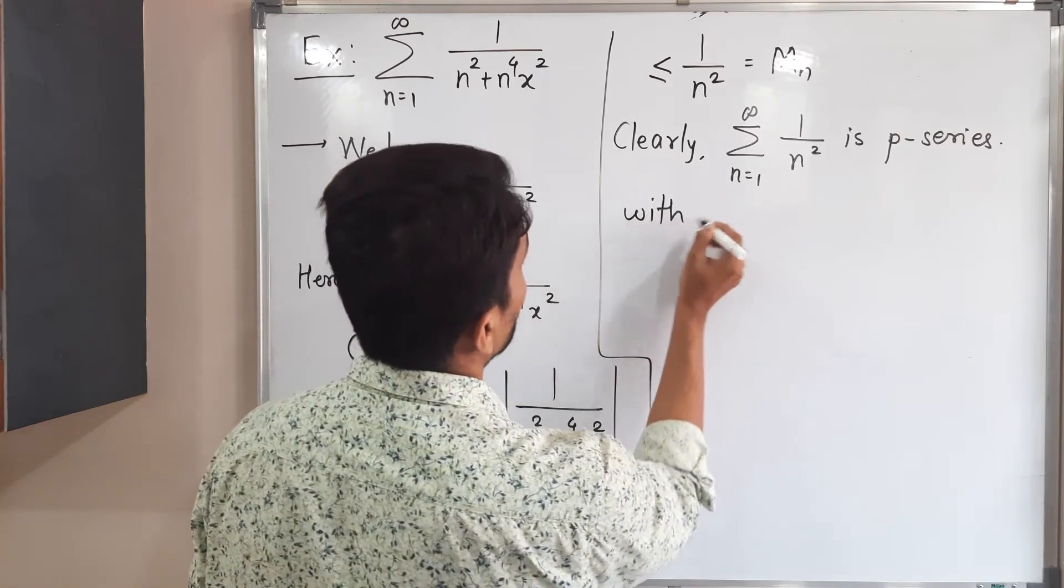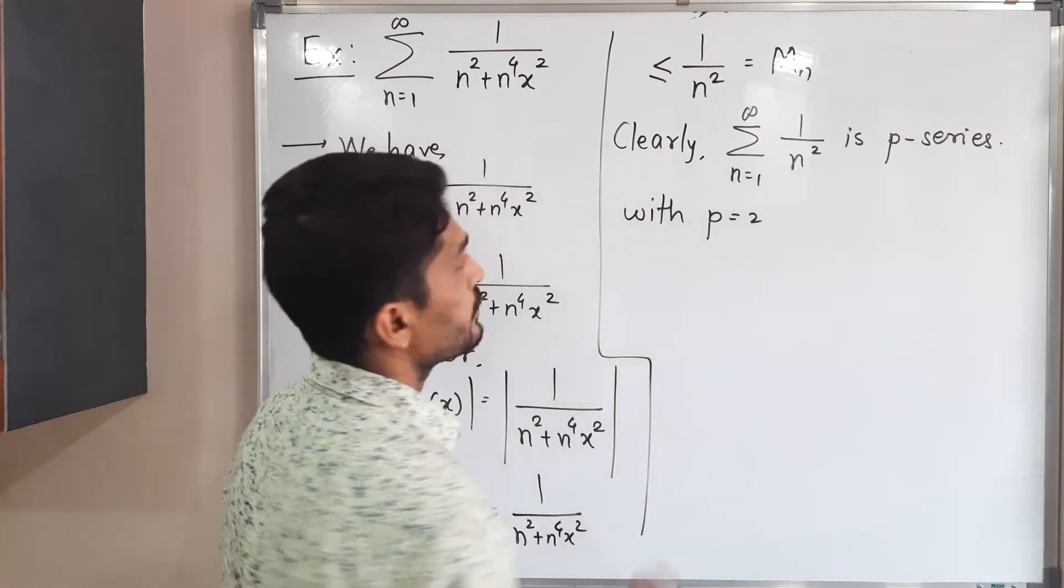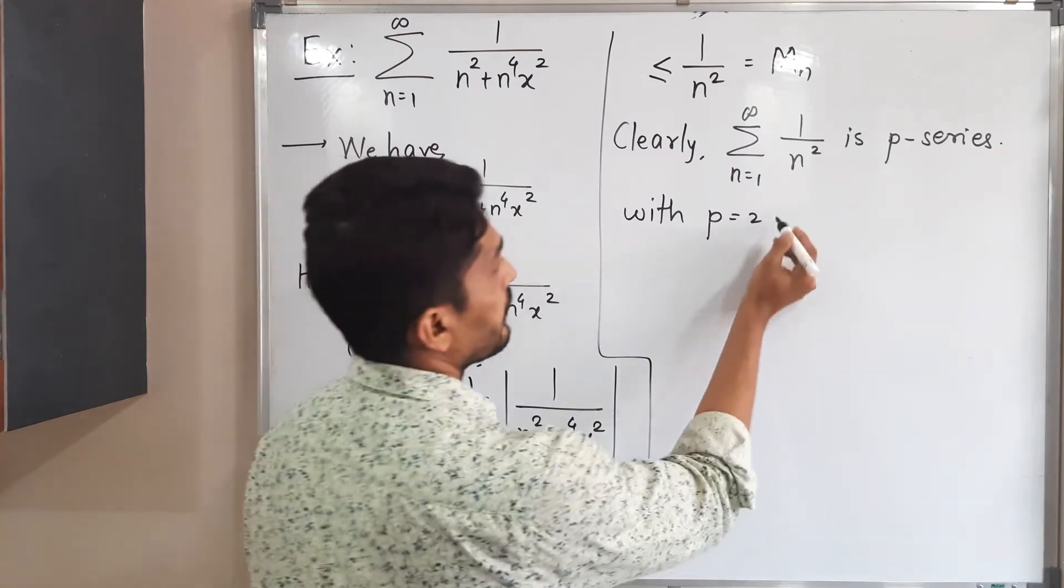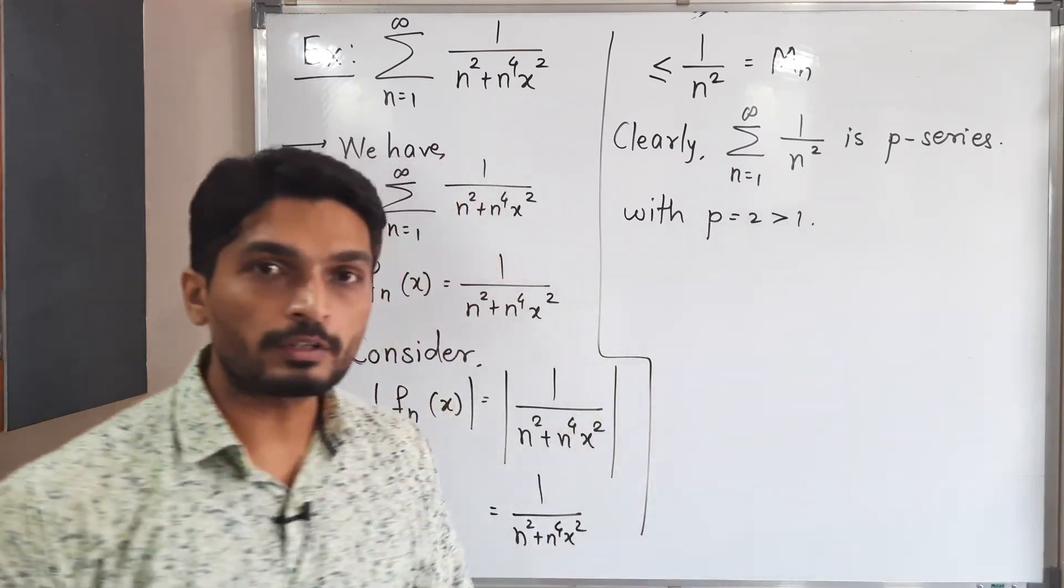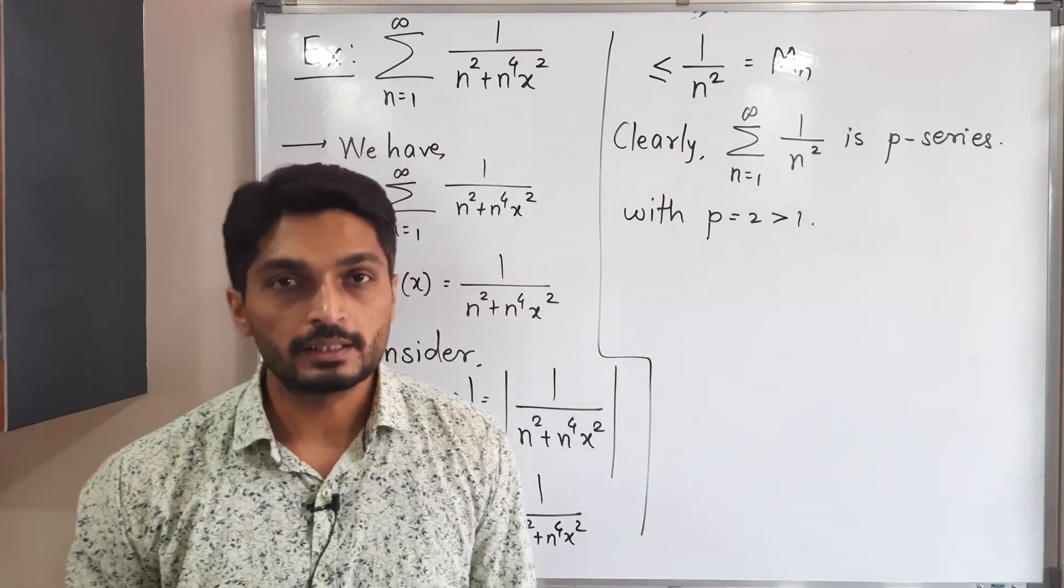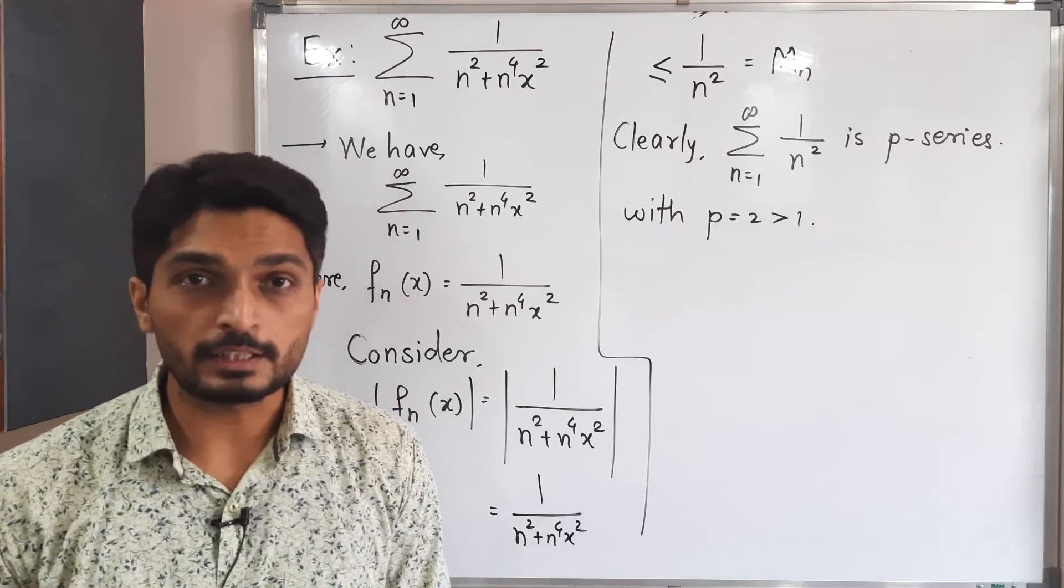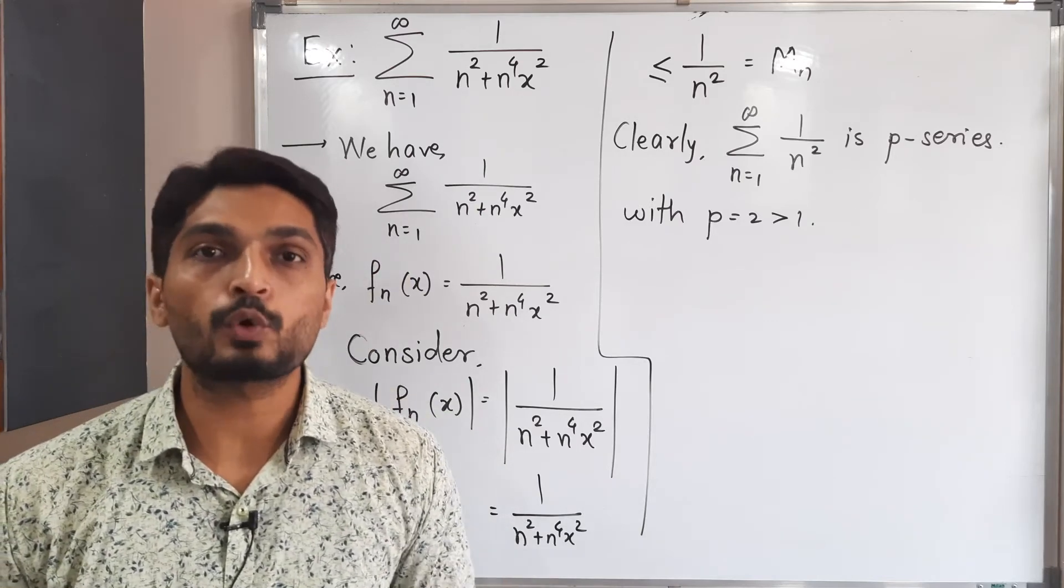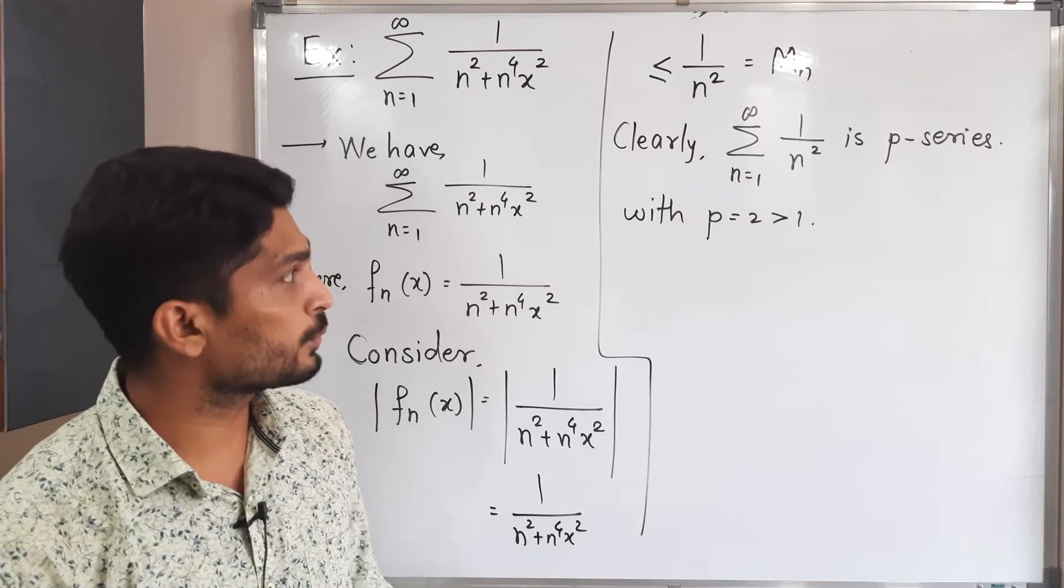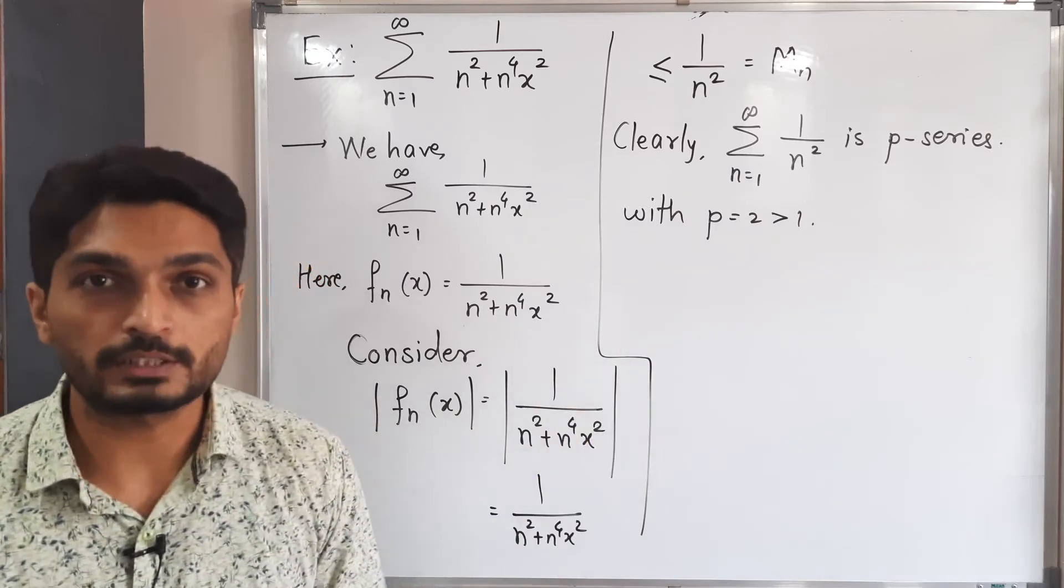With p is equal to 2 since power of n is 2, which is greater than 1. And one result we have already seen in second year BSc: if we have a p series with p greater than 1 then it is convergent series. So here also we have p is greater than 1, so that's why it is a convergent series.